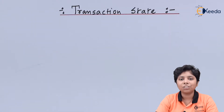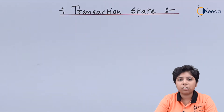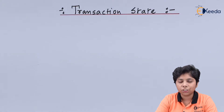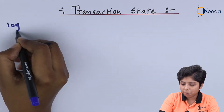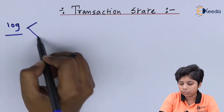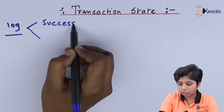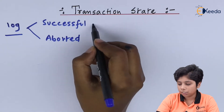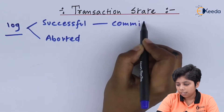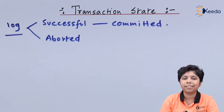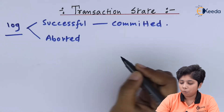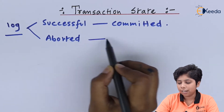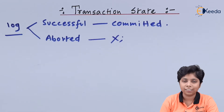In a committed state, the transaction has successfully completed its meaningful task. When maintaining records of successful and unsuccessful transactions, we can store them inside a log. The log holds both successful and aborted transactions. Successful transactions are then committed, meaning they have completed their assigned task, while aborted transactions are simply left without completion.